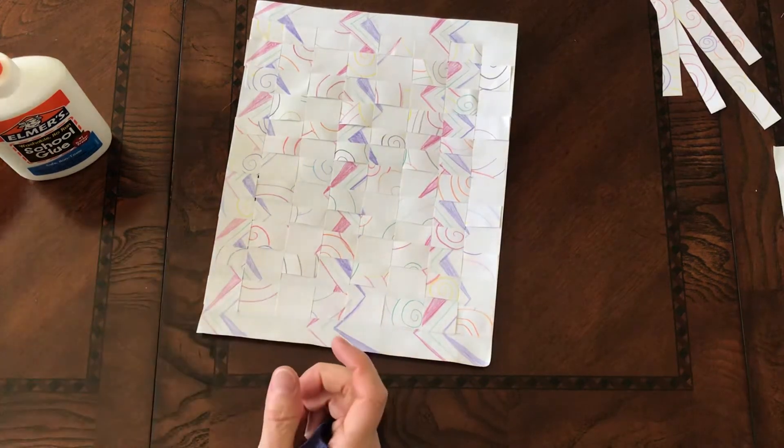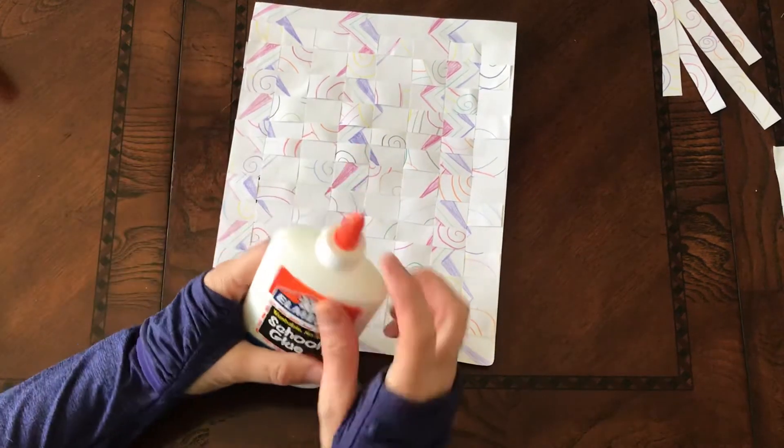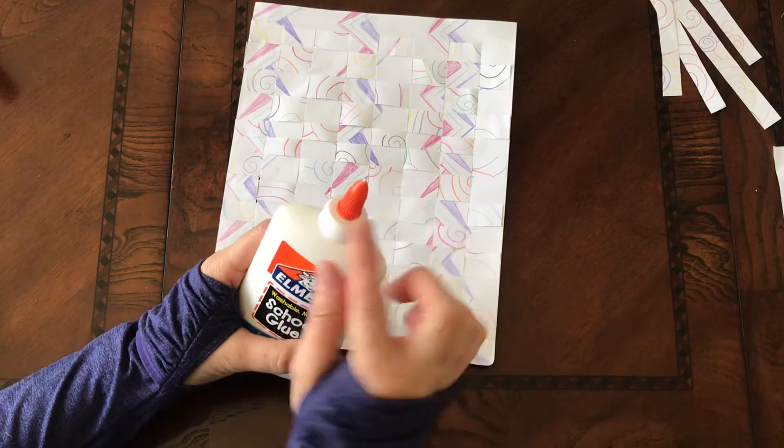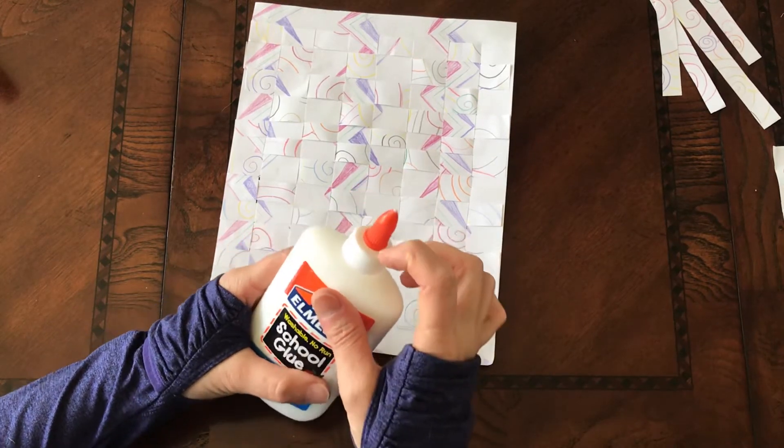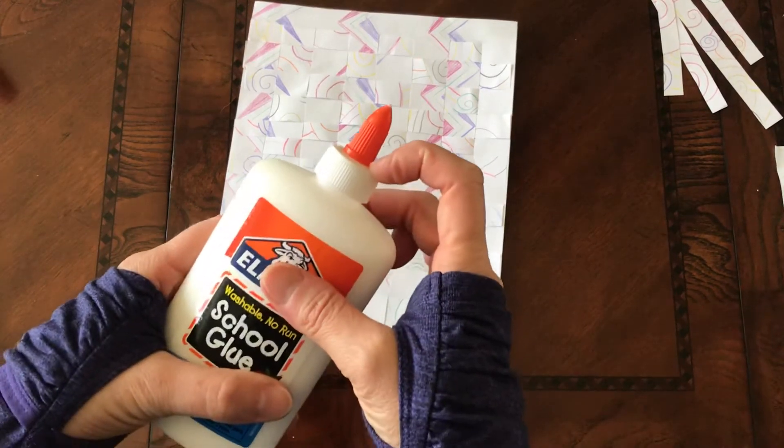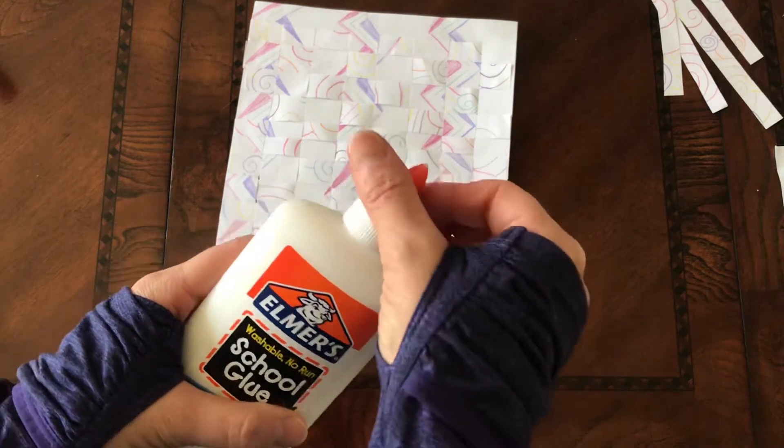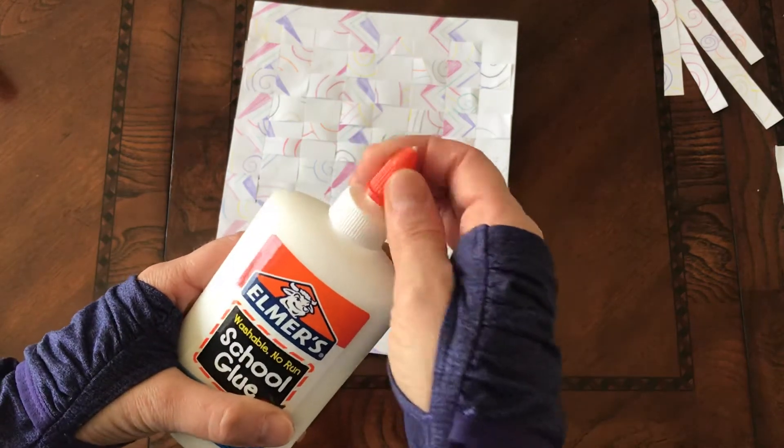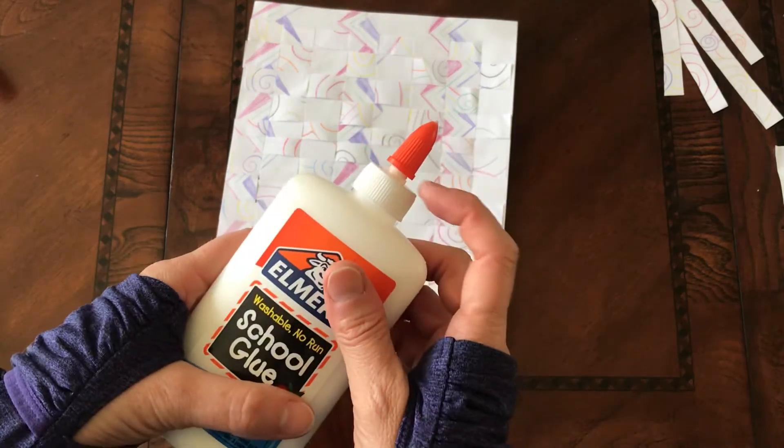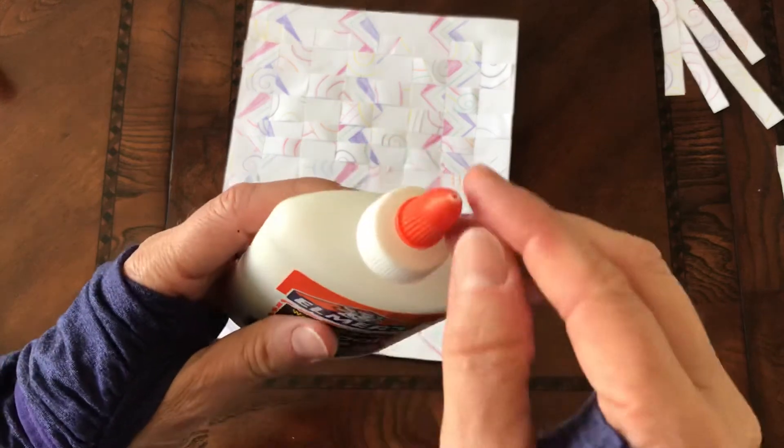Now, if you have a glue bottle, remember: lefty loosey, righty tighty. Right now the orange is touching the white. To loosen this up, to open it, we're going to do lefty loosey. The cap is away from the white.